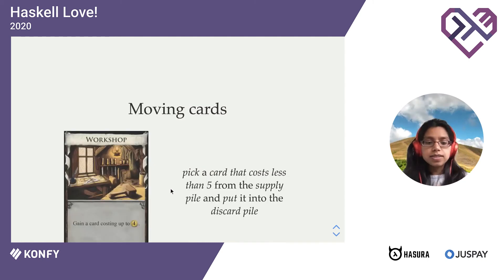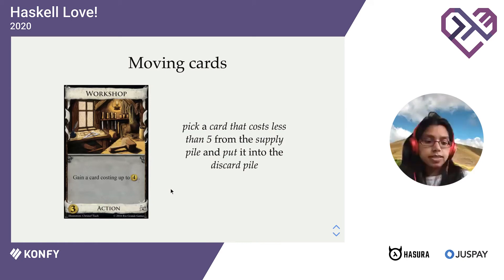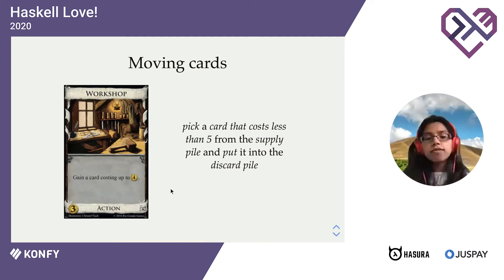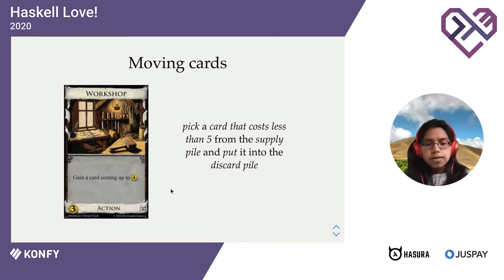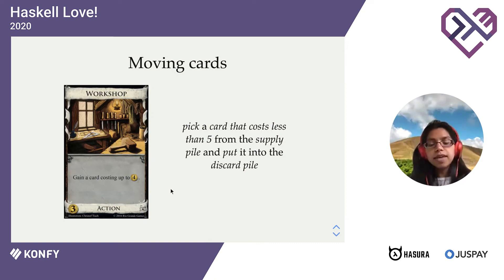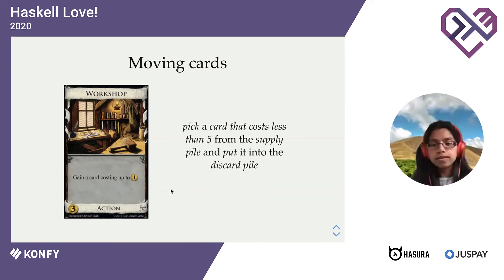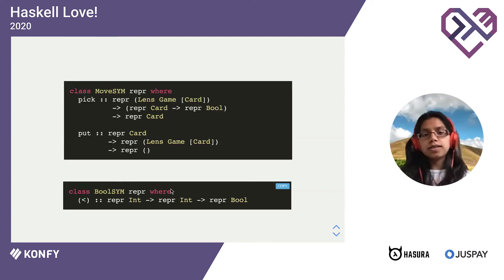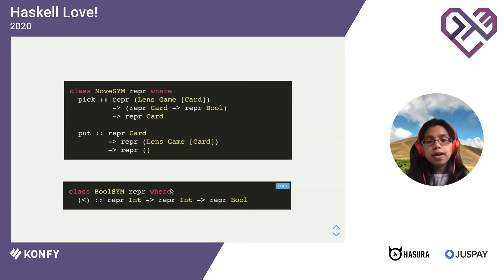But the cards we've modeled have been very basic — in fact, we can only model one card in Dominion so far. So let's look at something more interesting. This workshop card says: gain a card costing up to four gold. We can paraphrase this: gain means to take a card from the central supply pile and move it into your own discard pile. So we can paraphrase this as: pick a card that costs less than five from the supply pile, and put it into your discard pile. Now, pick here implies that there's some choice going on. A card less than five is a predicate — that means we need a language for cards and a language for booleans. And we're talking about a supply pile and discard pile, so we need a language for those.